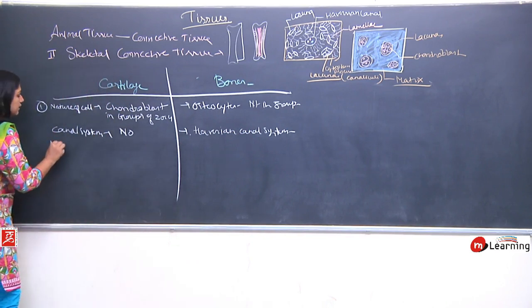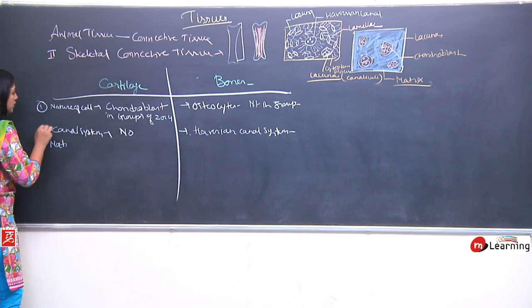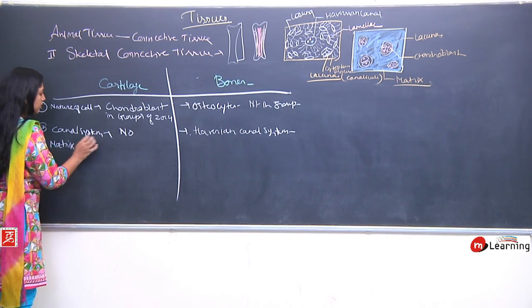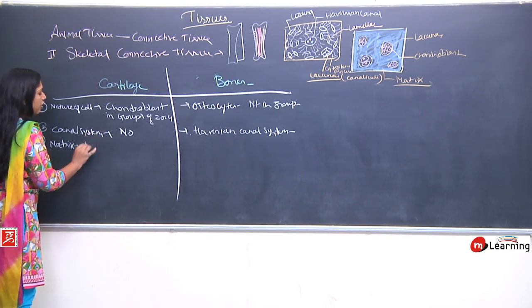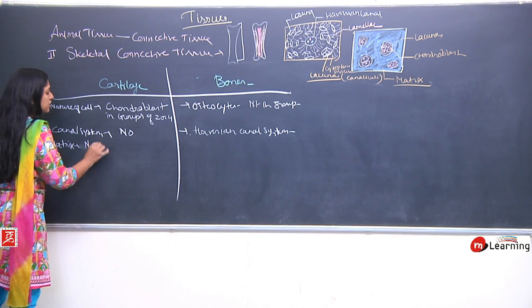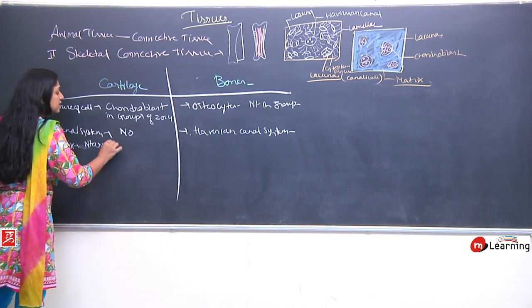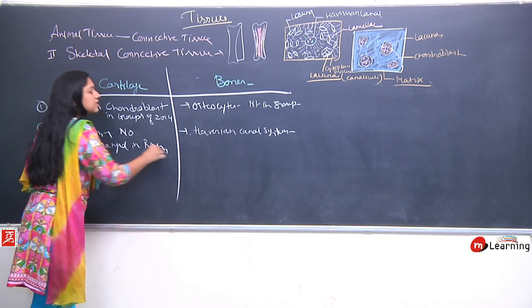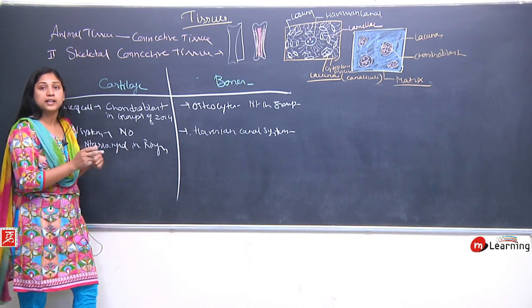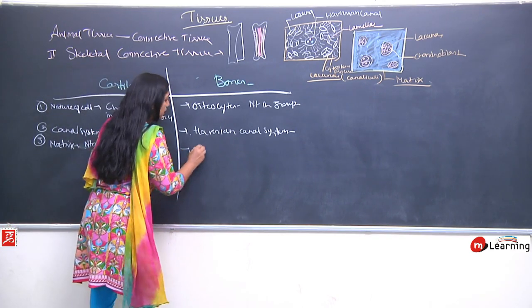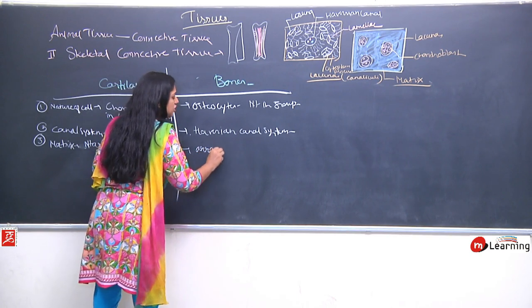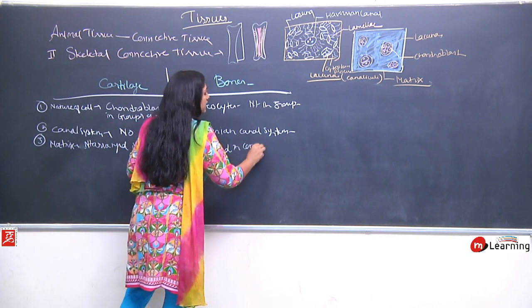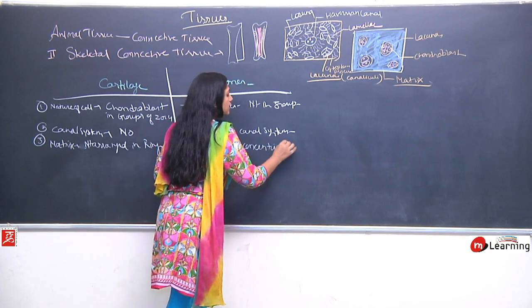Regarding matrix: in cartilage, the matrix is not arranged in rings, whereas in bones the matrix is arranged in concentric rings called lamellae.